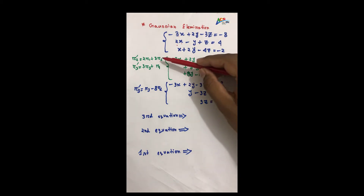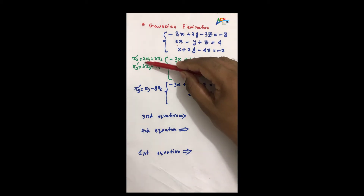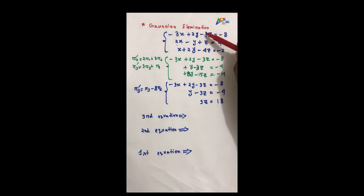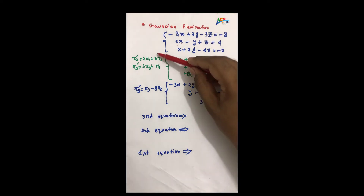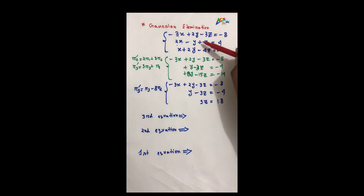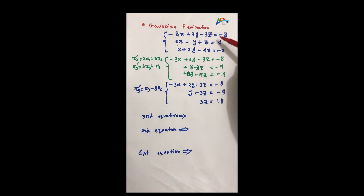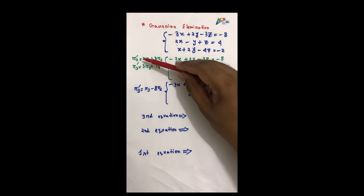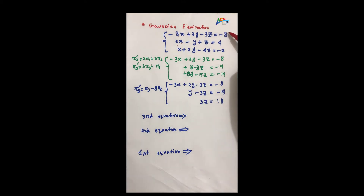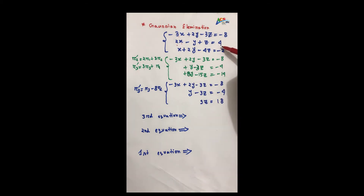Similarly, 2 into r1 gives 2 into 3z, which is 6z, minus 6z. Then 3 into r2 gives 3 into z, which is minus 3z. For the constants: 2 into r1 gives 2 into minus 8, which is minus 16. Then 3 into r2 gives 3 into 4, which is 12.